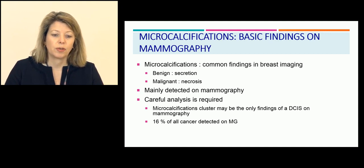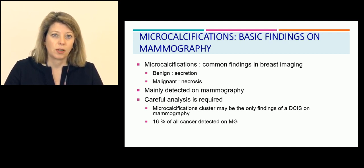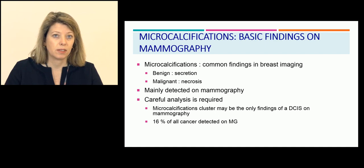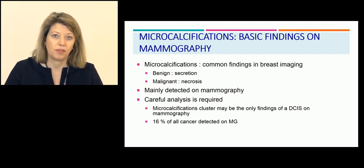This is a very important topic because microcalcification clusters are very common on mammography — these are the basic findings on mammography. They could be benign, such as secretion calcifications, or they could be malignant and correspond to necrosis. A careful analysis is required because a microcalcification cluster may be the only finding of carcinoma, especially DCIS (ductal carcinoma in situ), on mammography. It corresponds to roughly 16% of all cancers detected on mammography.